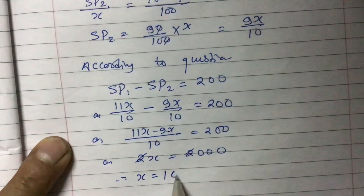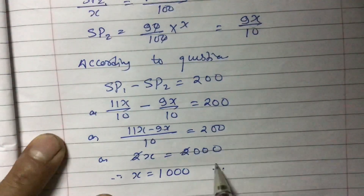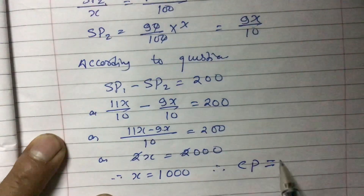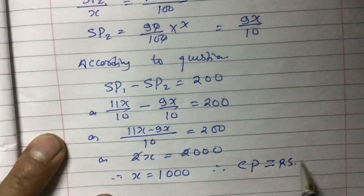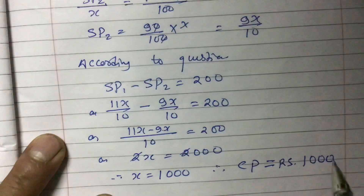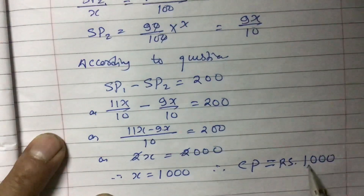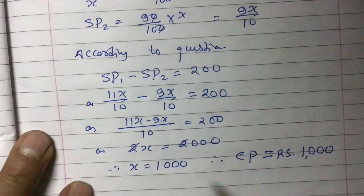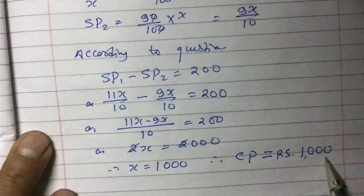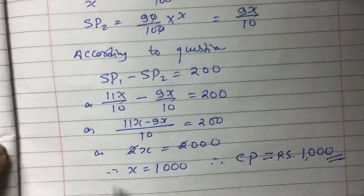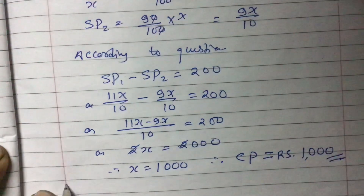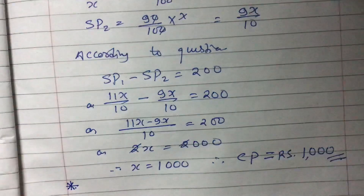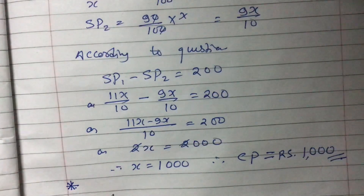Therefore, the cost price CP equals rupees 1000. We got the answer. Now I will give you one more similar type of question for practice.